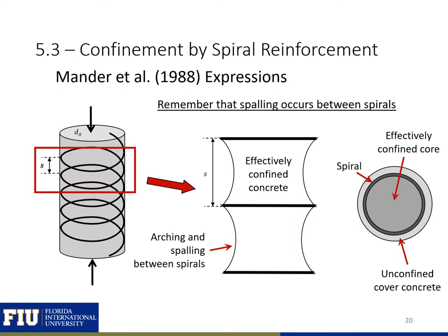Now we're going to walk through the Mander et al. expressions that take into account confinement and allow us to find a stress-strain curve for confined concrete. Spalling occurs between spirals, so we'll have some effectively confined concrete width at the location of our spirals, but that effective confined concrete width decreases between our spirals. The unconfined cover concrete will spall off when confinement starts, leaving just the effectively confined core contained within our spirals.